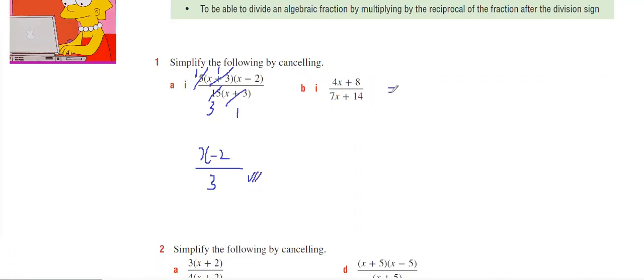Looking at part b, I can see a common factor in the numerator of 4. So 4 outside of (x + 2), and I've got a common factor of 7 outside of (x + 2), and the (x + 2)'s cancel to leave 4 over 7.